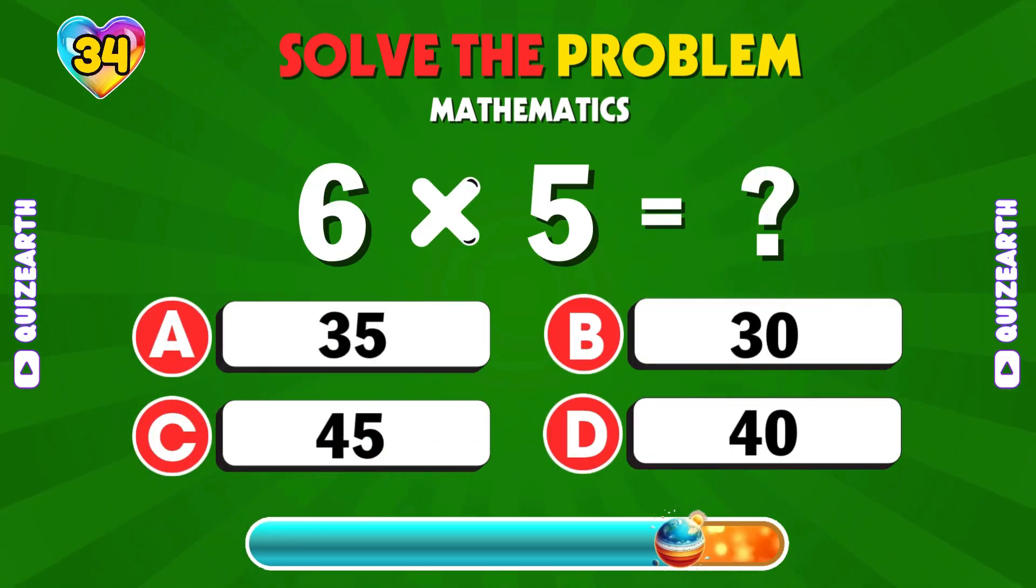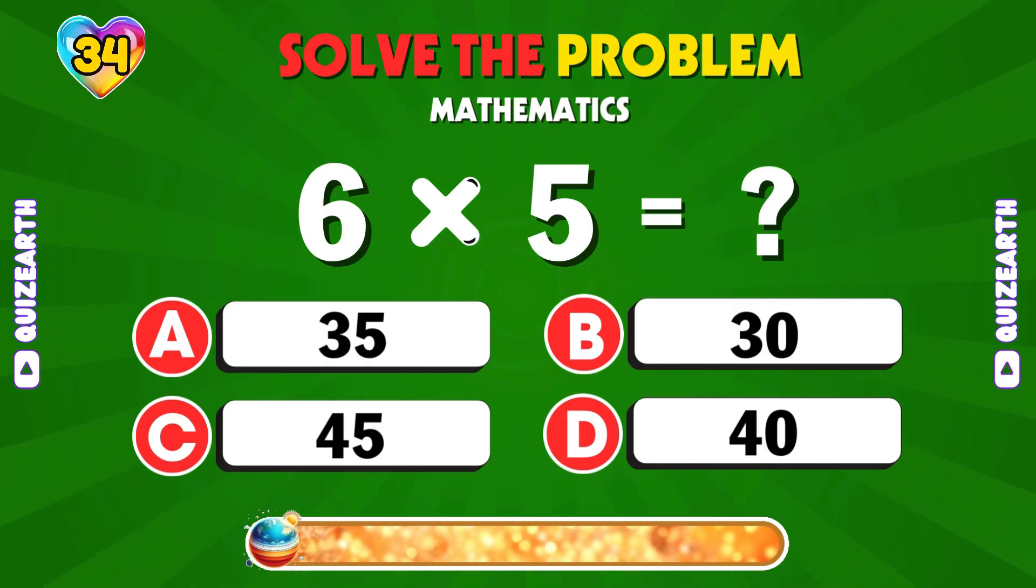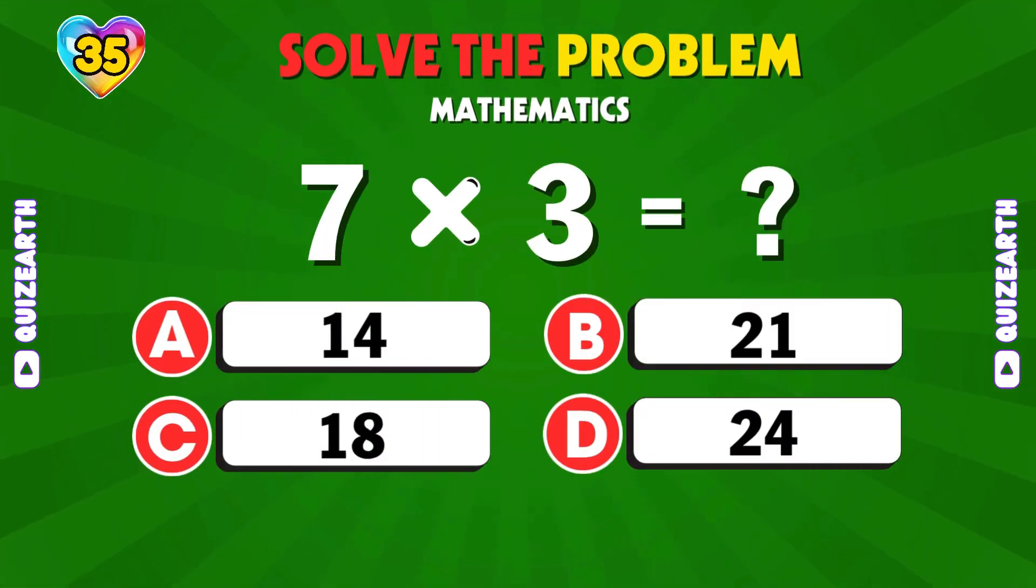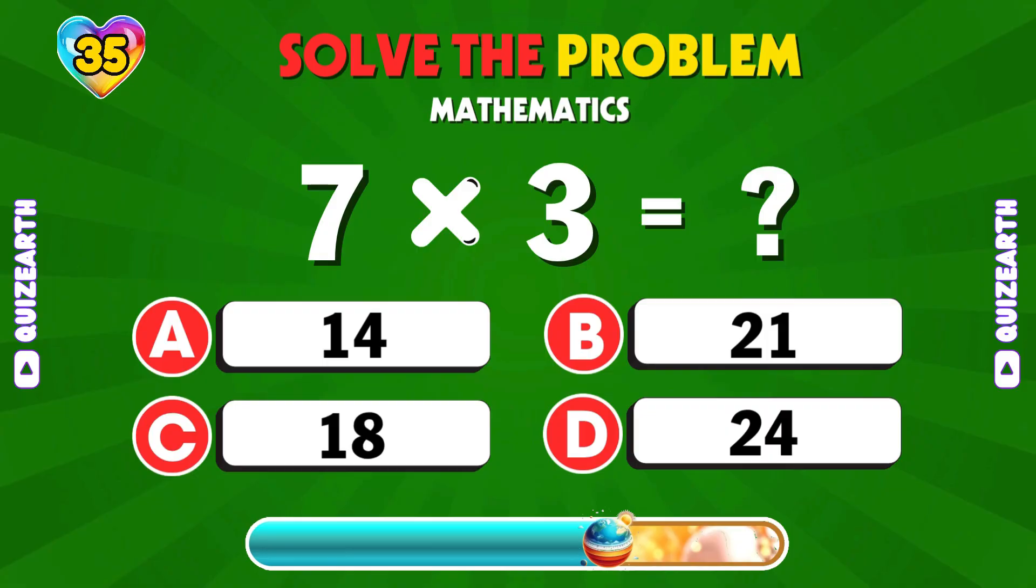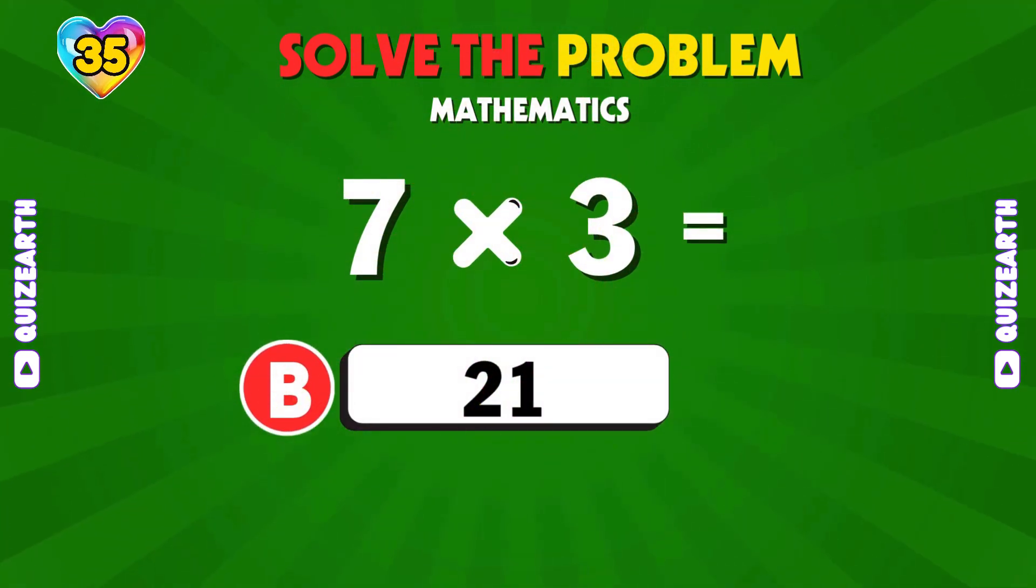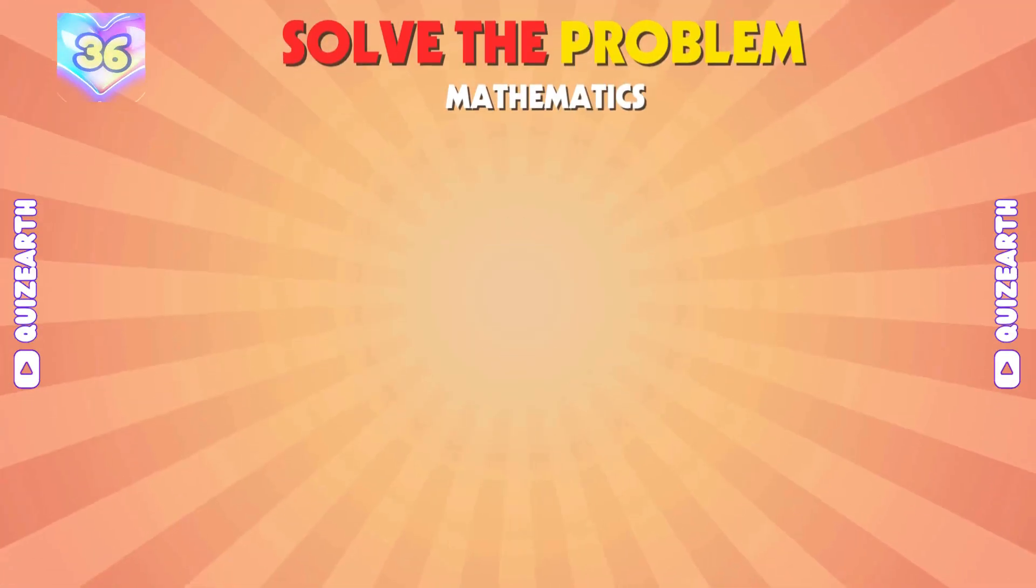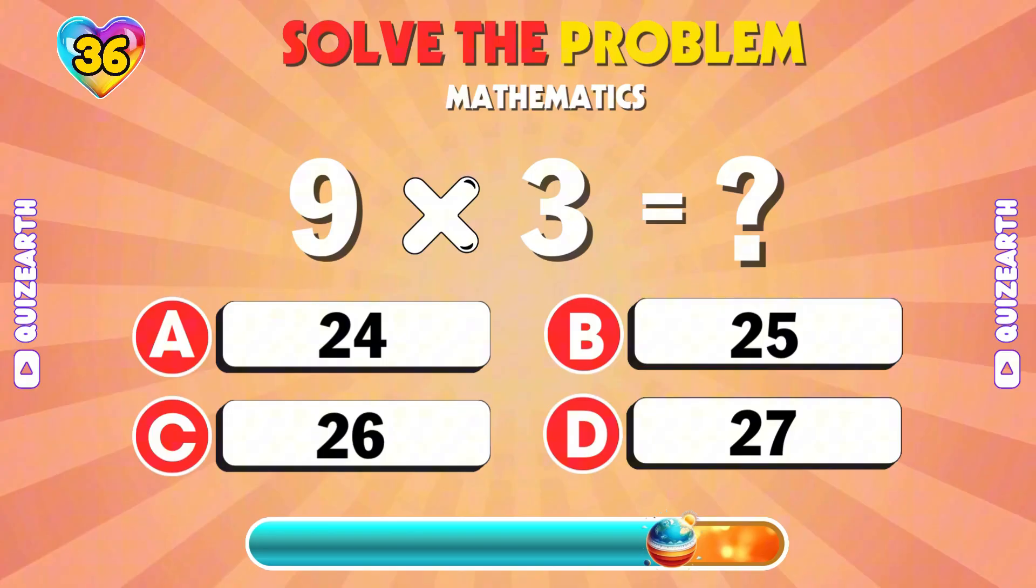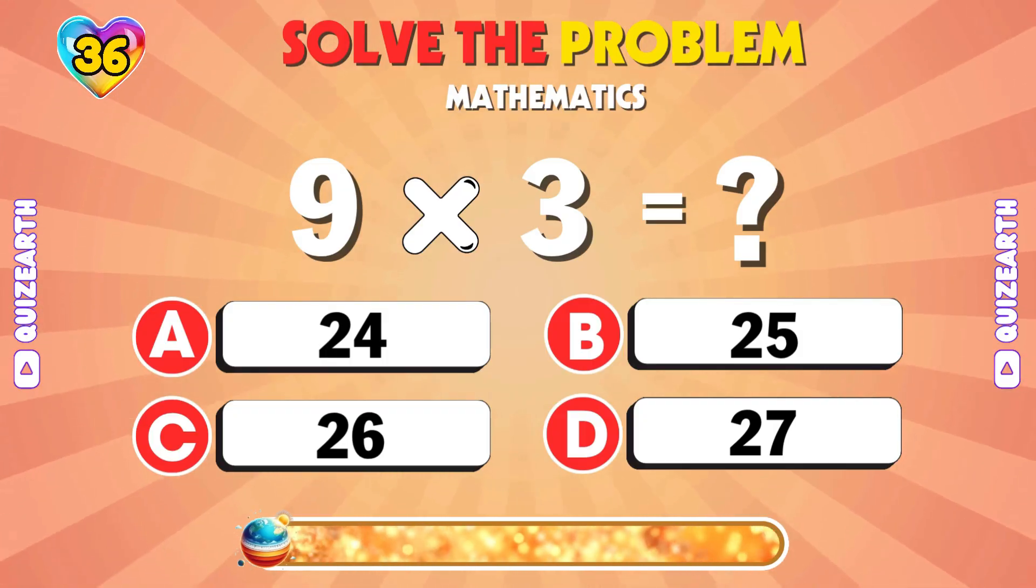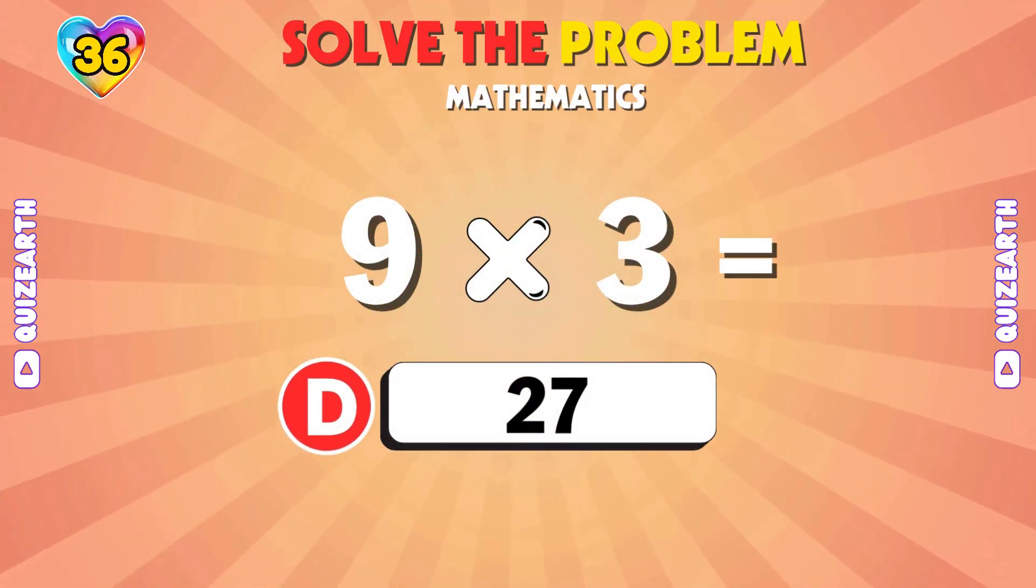Say it quick, 6 times 5. Answer, 30. Now try, 7 times 3. That's 21. Speed test, 9 times 3. Correct answer, 27.